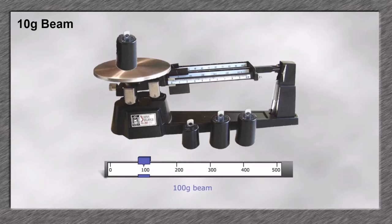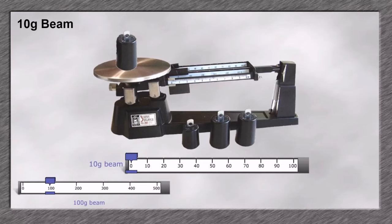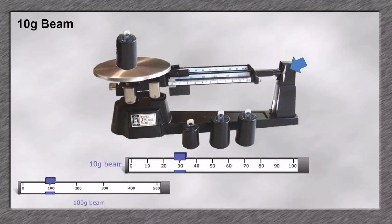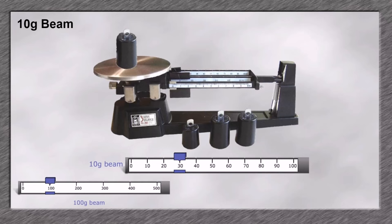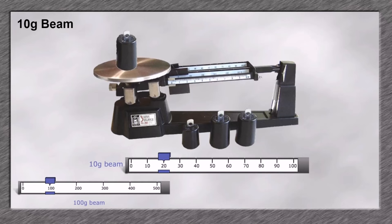When you have determined the 100 gram weight, go to the 10 gram beam. Select each 10 gram increment to see where the scale should be set. When the scale shifts, choose the increment 10 less than the number that caused the shift.